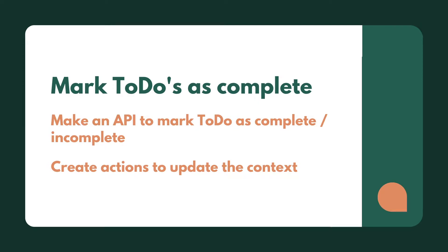Hi guys, welcome back to the next lesson. In this lesson we're going to take a look at marking our to-dos as complete. We want to switch them between the lists, whether they're complete or incomplete. To do this, we need to make an API call to our back end to mark them as complete, and we also need to create some actions in our global context to allow them to switch between the lists and manage the lists properly.